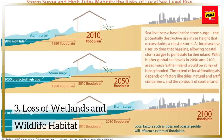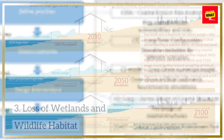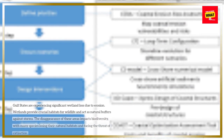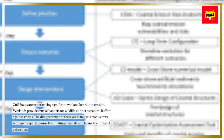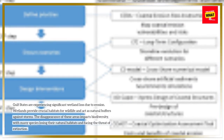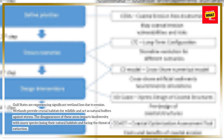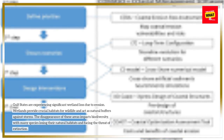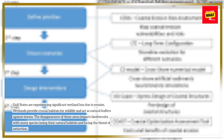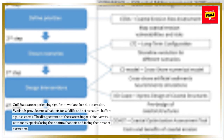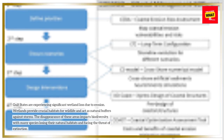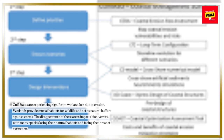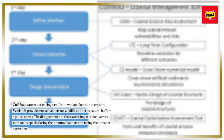Gulf states are experiencing significant wetland loss due to erosion. Wetlands provide crucial habitats for wildlife and act as natural buffers against storms. The disappearance of these areas impacts biodiversity, with many species losing their natural habitats and facing the threat of extinction.